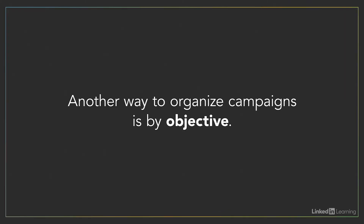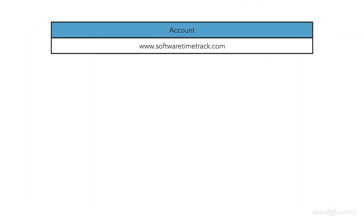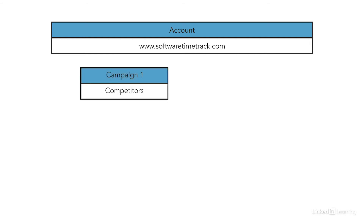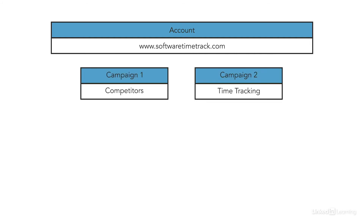You can also organize campaigns by objective. Let's say we're advertising a software company that provides online time tracking. You might have two objectives: one could be to show up alongside competitors, and the other is to show up for people searching for time tracking software. You could then create two campaigns — one for competitors and one for time tracking software — and beneath that, set up several ad groups. The goal is to have tightly themed ad groups so you're able to show ads that are really relevant to the consumer.